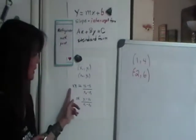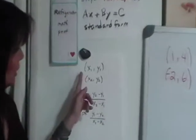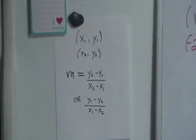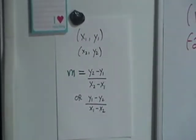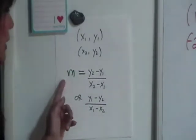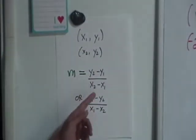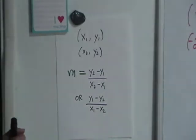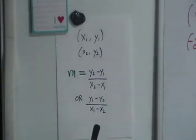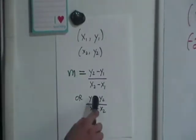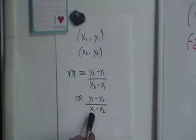Now let's review how to calculate m. We recall that if we have two points, x sub 1, y sub 1, and x sub 2, y sub 2 on the line, then to calculate m, we just use the formula y sub 2 minus y sub 1 all over x sub 2 minus x sub 1, or of course we can switch the order and have y sub 1 minus y sub 2 all over x sub 1 minus x sub 2.